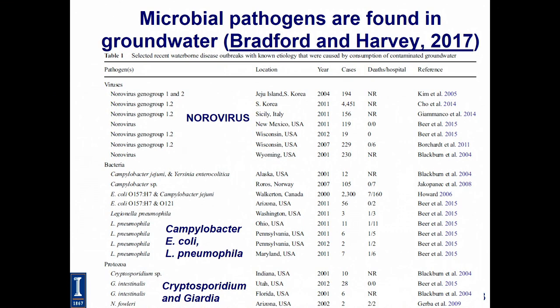This is the most recent and most comprehensive data review on microbes found in groundwater, by Scott Bradford and Charlie Harvey of USGS and USDA. Most of the data are available from the U.S. because it is clearly easier to conduct this kind of work here. What we found is that noroviruses are present pretty much everywhere — and I'm sure you've all been sick from norovirus at some point. There are also other bacteria — Campylobacter, Legionella, E. coli — and protozoa such as Cryptosporidium and Giardia. In developing countries, the magnitude would likely be much, much higher.